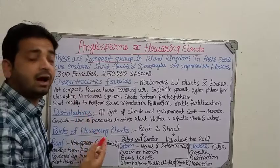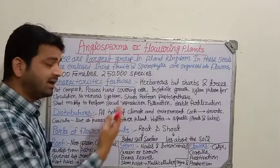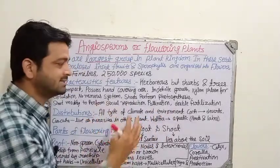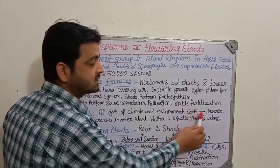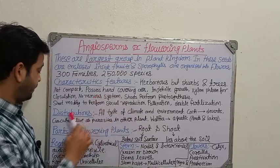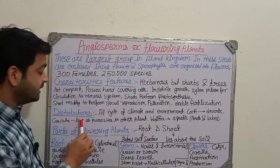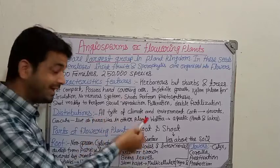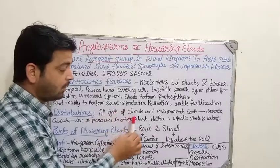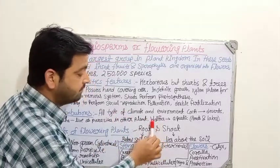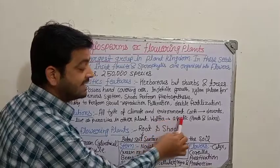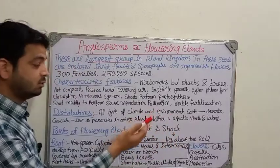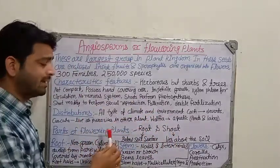Coming to distribution — where are they obtained? In the earth, all types of climate and environment are suitable for the growth of flowering plants. For example, cacti develop in the desert, while Cuscuta lives as a parasite on other plants and also comes under the flowering plants. Wolffia (W-A-L-F-F-I-A) is aquatic, found in water bodies like ponds and lakes, similar to lotus.